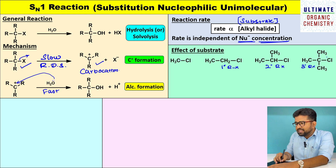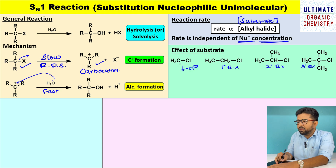For example, in the case of methyl chloride, the halogen leaves as Cl minus. As a result, a methyl cation intermediate is formed.